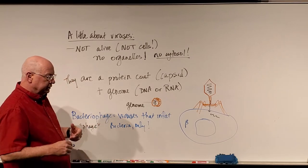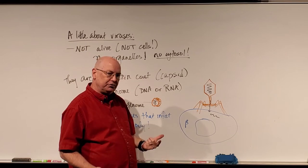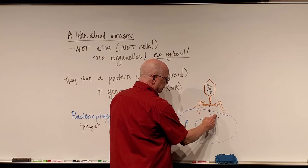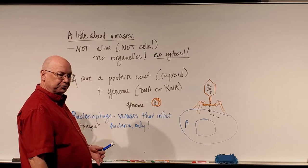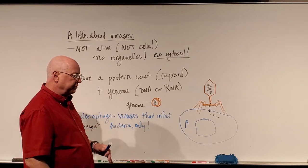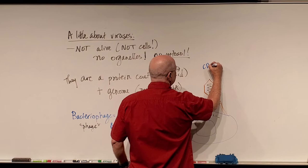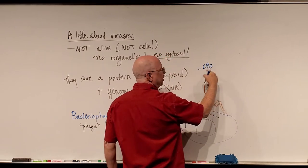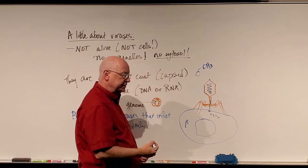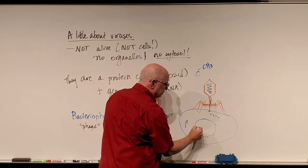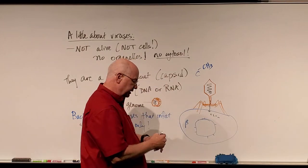Bacteriophage can attach to bacteria and inject their DNA. As they do that, there are enzymes that can cut up the viral DNA, and that protects the bacterium from those phage. In order to protect itself, bacteria have the ability to add what's called a methyl group — a CH3 — to some of the cytosines. Carbon can have up to four bonds, so we can stick this to a cytosine, giving us methylated cytosine. All over the bacterial DNA, they can methylate their cytosines, and it protects their own DNA from those enzymes.